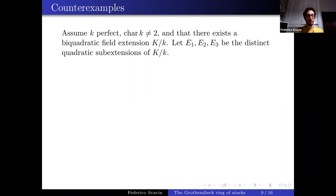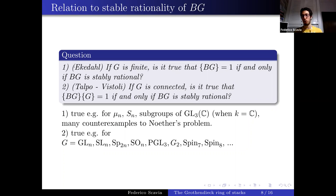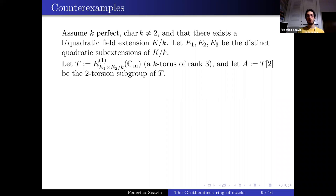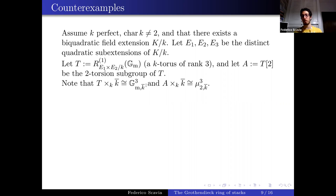My first result is counterexamples of arithmetic nature — not over an algebraically closed field — giving negative answers to both questions. Take a perfect field of characteristic different from 2 with a biquadratic field extension D/k, so the Galois group is Z/2 × Z/2, which has three distinct quadratic subextensions E1, E2, E3. Then T is the norm-one torus relative to E1 × E2: a k-torus of rank 3 that becomes Gm^3 over the algebraic closure.